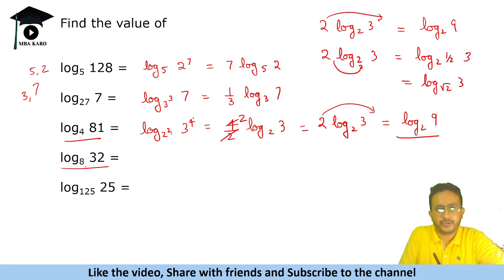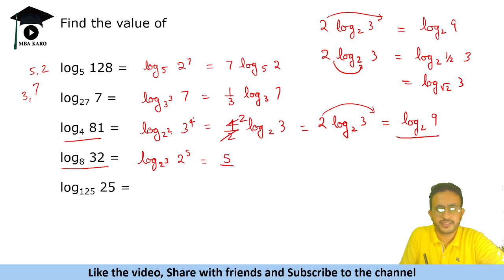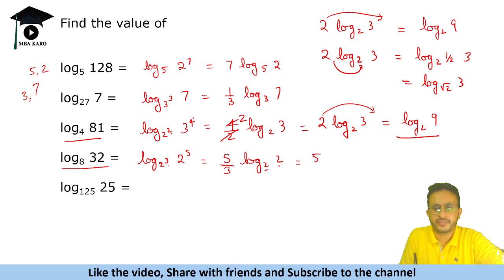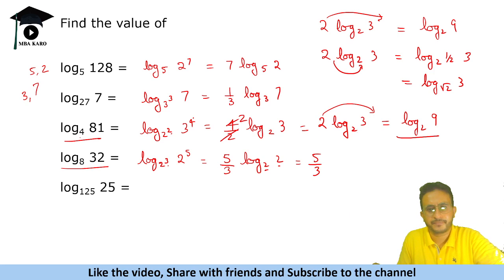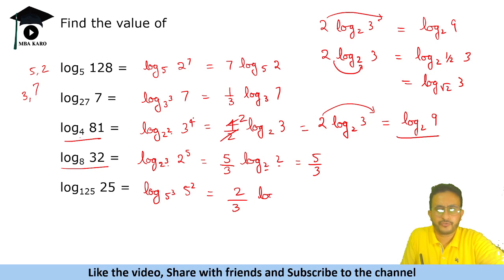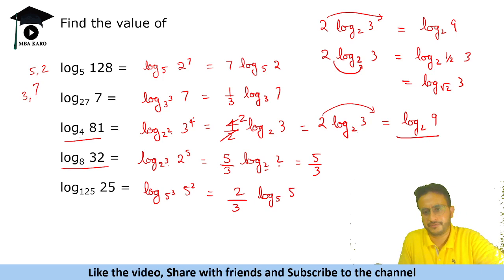Let us look at log base 8 of 32. Here 8 is 2 cubed and 32 is 2 to the power 5. The 5 comes to the numerator and 3 to the denominator, giving (5/3)·log base 2 of 2. Since the base and argument are the same, log base 2 of 2 equals 1, so the result is 5/3. Similarly, log base 125 of 25 — 125 is 5 cubed and 25 is 5 squared — gives (2/3)·log base 5 of 5, which equals 2/3.